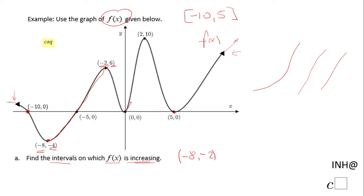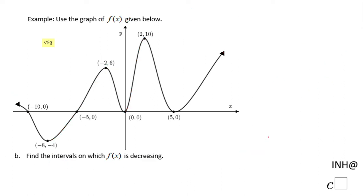to negative 2 — that's one interval where the function is increasing. Looking further, there's one more interval where the function is increasing, from 0 to 2. So the intervals on which f of x is increasing are these two intervals. You may also use the union sign to combine them.